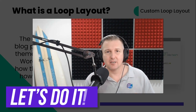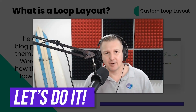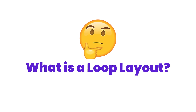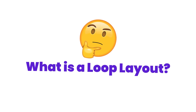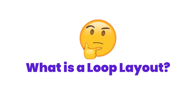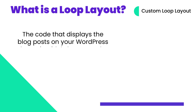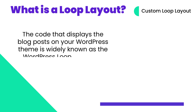So let's take a look at my diagram I have right here. Here I have a definition for what a custom loop layout is, because we want to first know what we're talking about. A custom loop layout within WordPress is basically just a block of code that displays your blog posts in your WordPress theme — it's just called the WordPress loop.